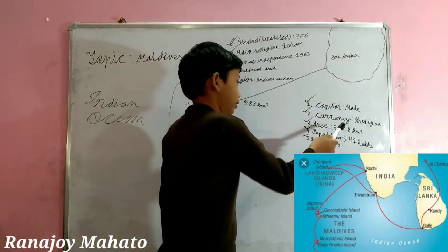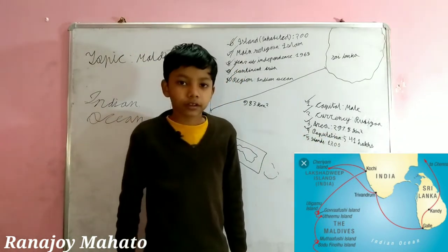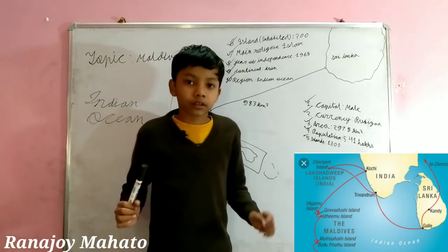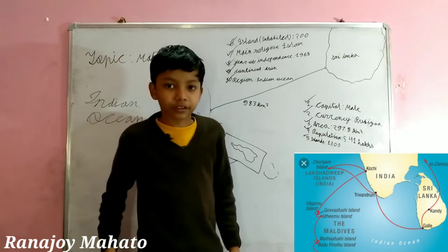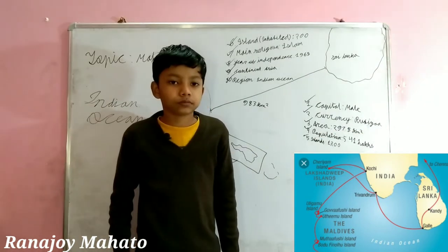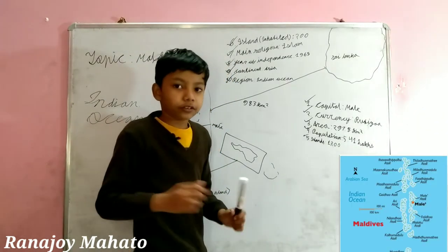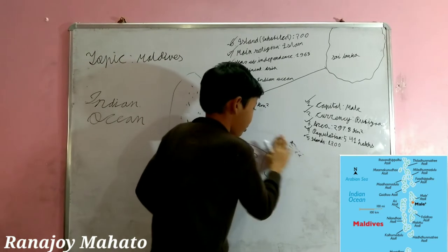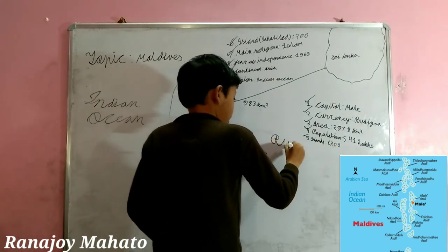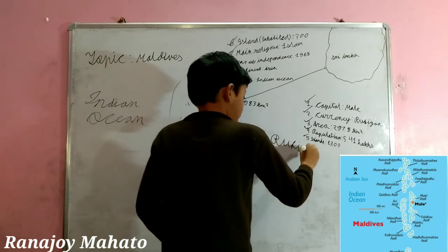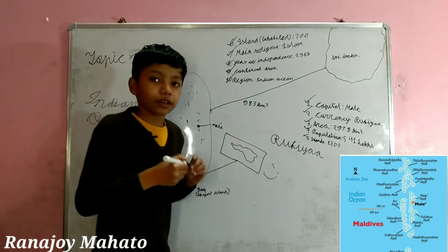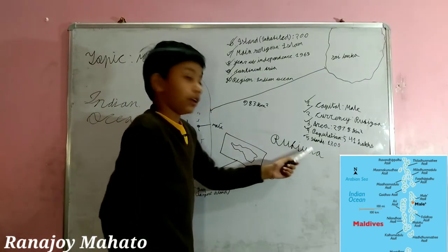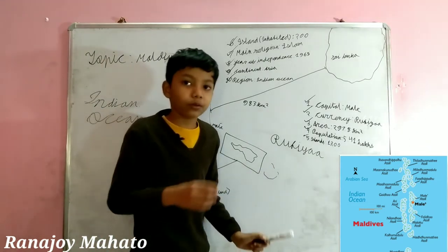The second fact is currency. What is the currency? It is Rufiyaa. There's not one A but two A's — R-U-F-I-Y-A-A. There's not one A, but two A's. Or you can just say double A's.